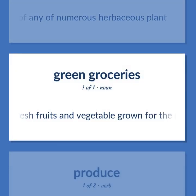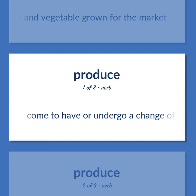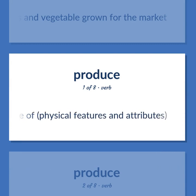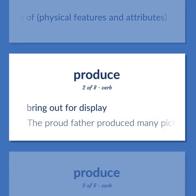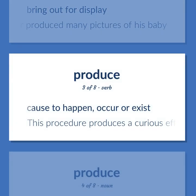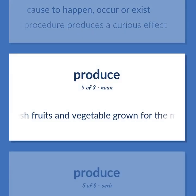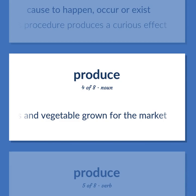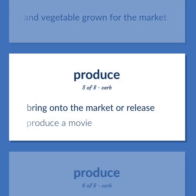Produce (noun): Fresh fruits and vegetables grown for the market. Produce (verb): Come to have or undergo a change of physical features and attributes. Bring out for display — the proud father produced many pictures of his baby. Cause to happen, occur, or exist — this procedure produces a curious effect. Bring on to the market or release — produce a movie.